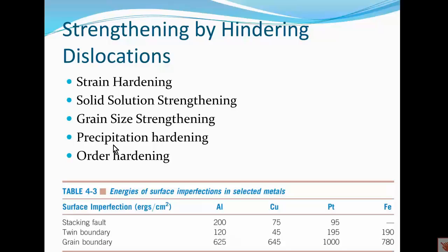We also talked about grain size strengthening in this module, where the presence of grain boundaries hinders dislocation movement. Later in this course we will talk about precipitation hardening, where the formation of precipitate compounds within the crystals disrupts the crystal lattice and impedes the movement of dislocations. We will also learn about order hardening, where ordering of the crystal in terms of the location of a dopant or impurity results in an increased Burgers vector for slip, and hence increased stress required — and hence increased strength.